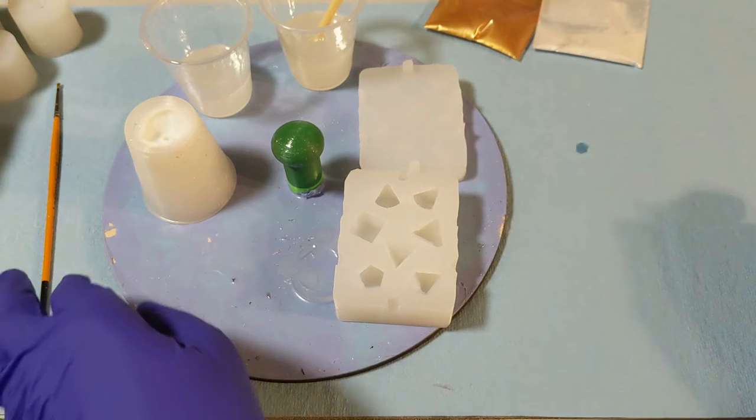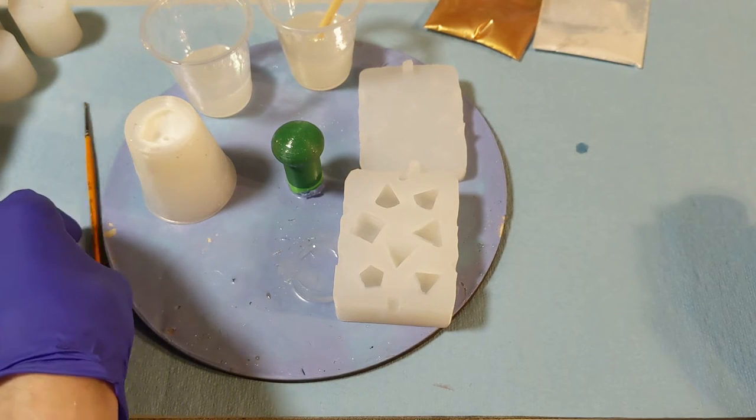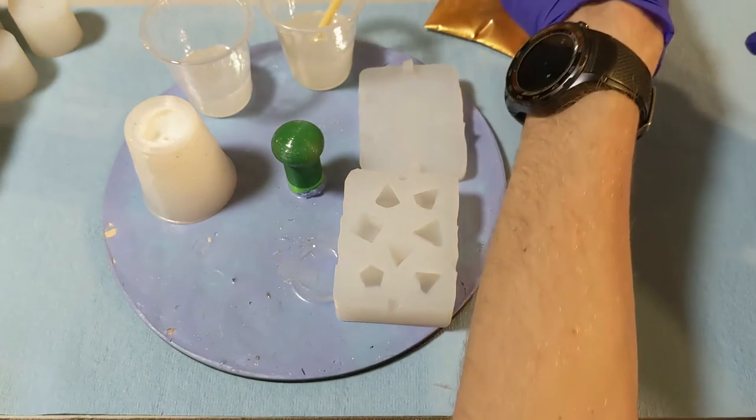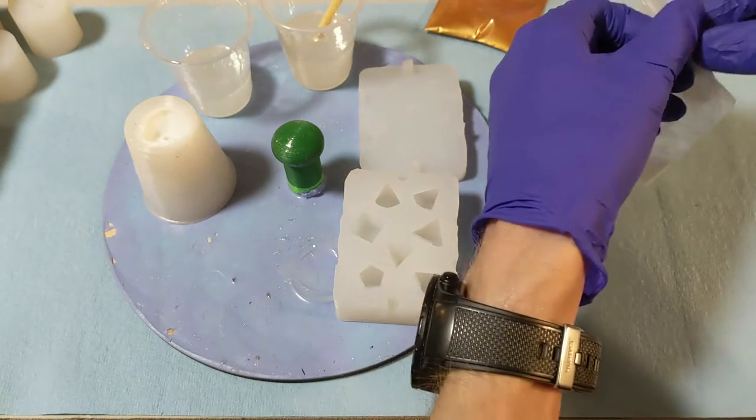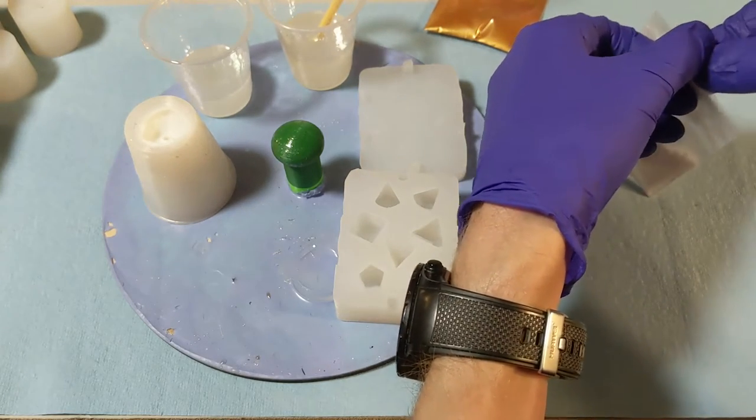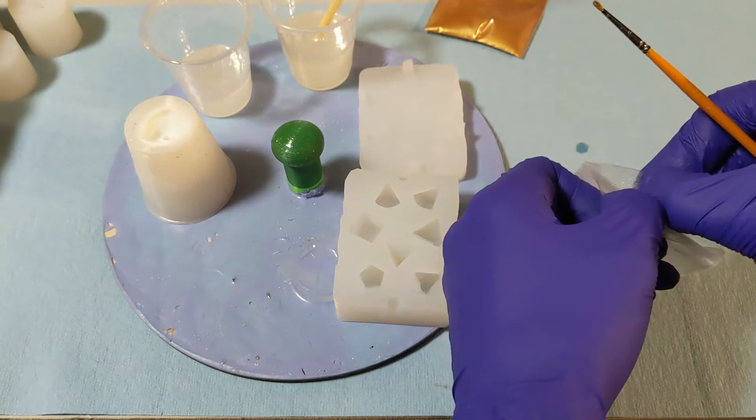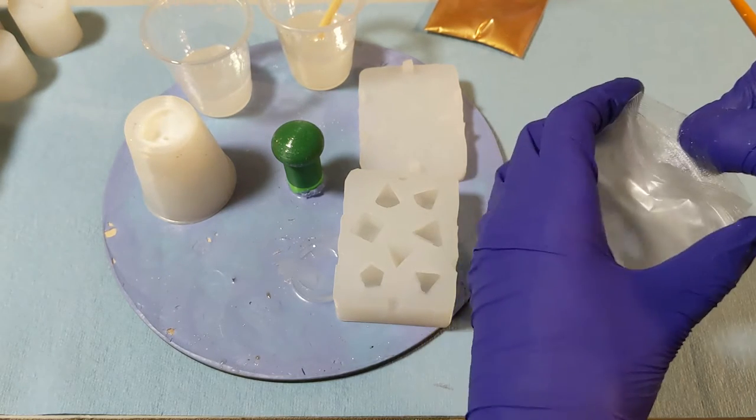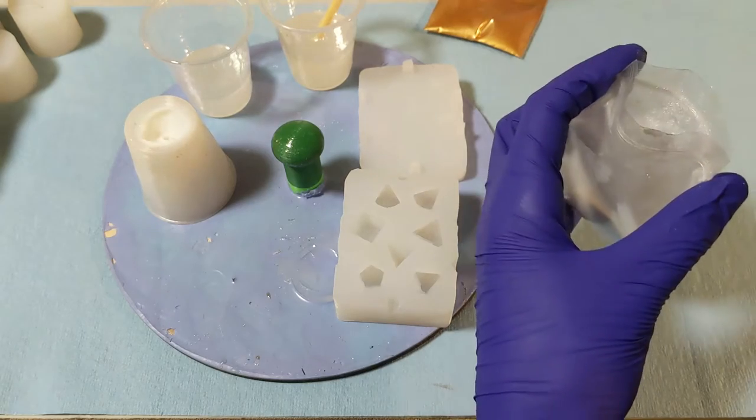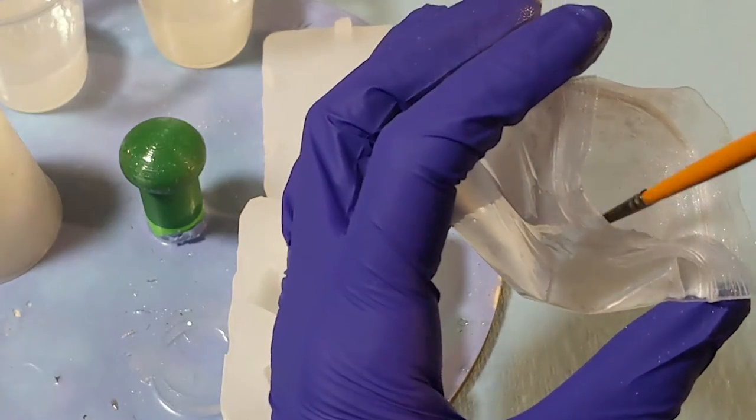I'm going to take this paintbrush, dip it into the mica powder, and then paint each of the numbers. I'm going to try to do as best I can, only touching the numbers, and as you can imagine, I find out that it's not that easy to put powder on silicone.